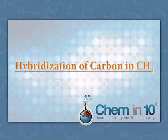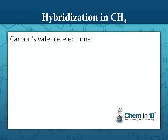This is Melanie Fine of Chem in 10, and today we're going to talk about the hybridization of carbon in methane. Carbon has four valence electrons. Two of opposite spin are in the 2s orbital, and the remaining two are spread out in the 2p orbital.